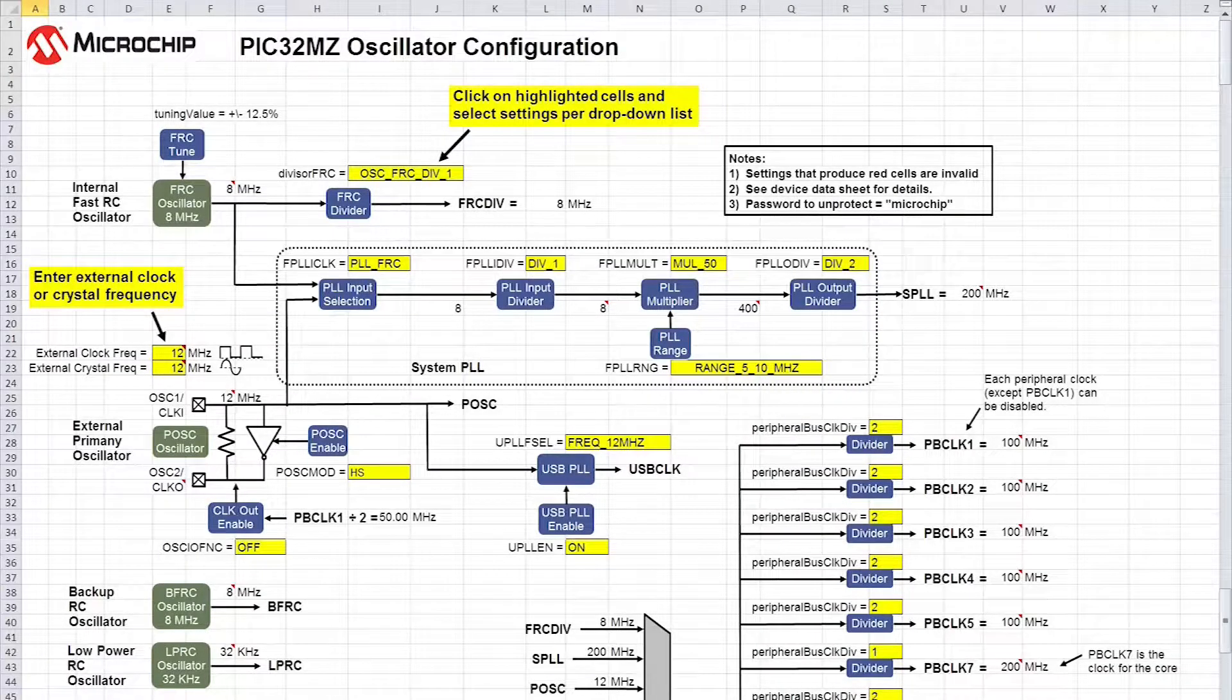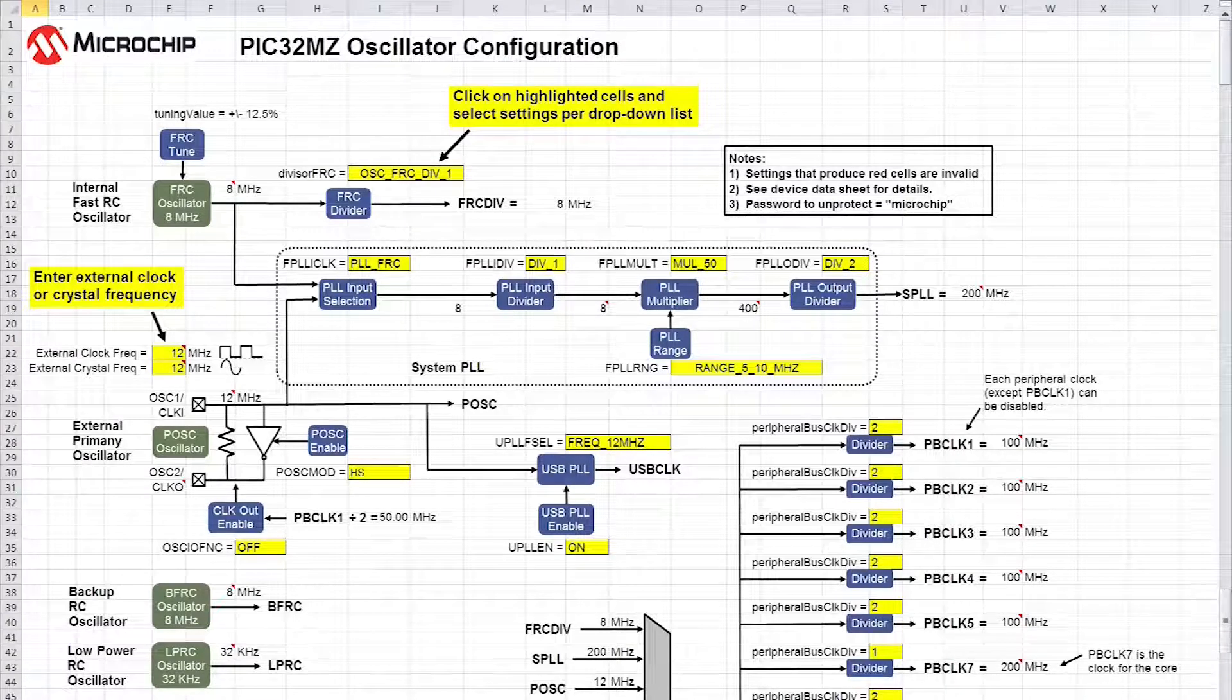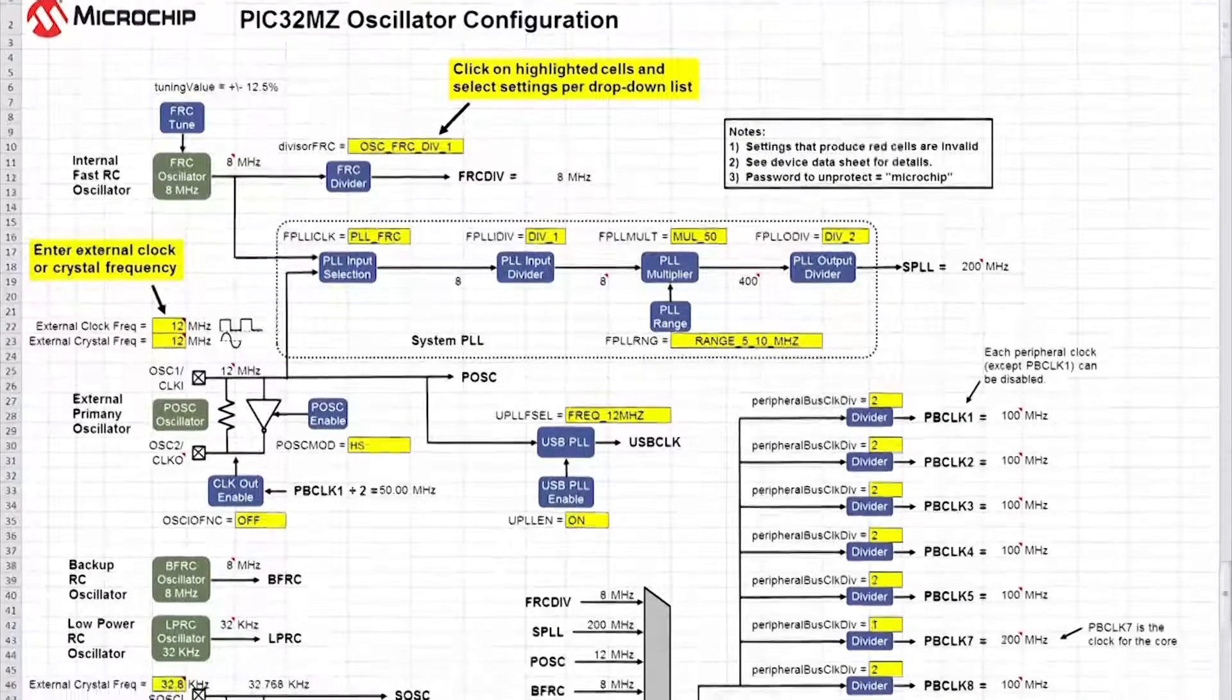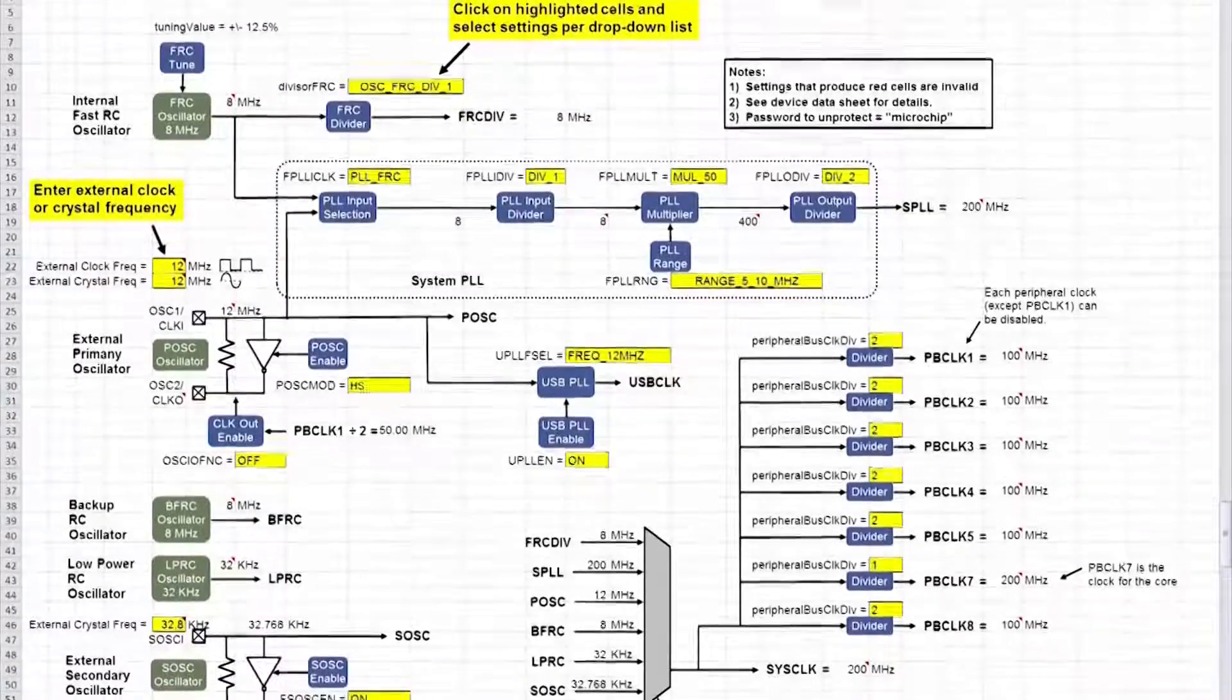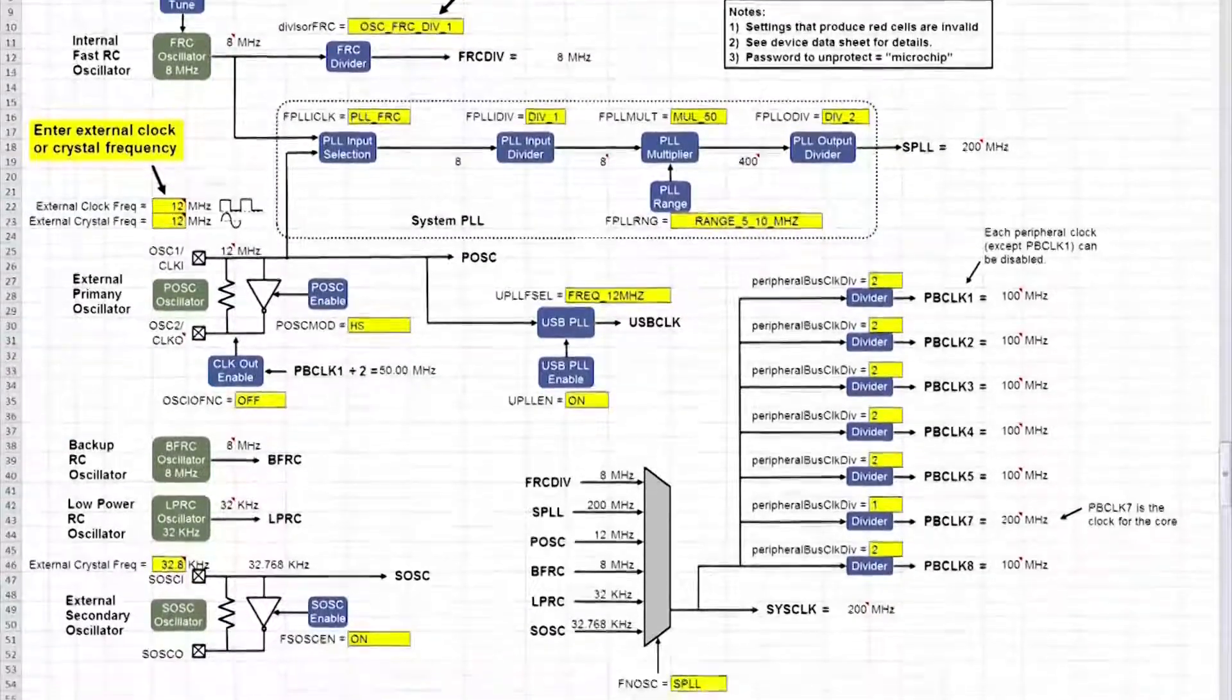Hi, my name is Bob Smith and I'm a technical training engineer here at Microchip. I've created a graphically oriented spreadsheet that will help you configure the oscillator on the PIC32.